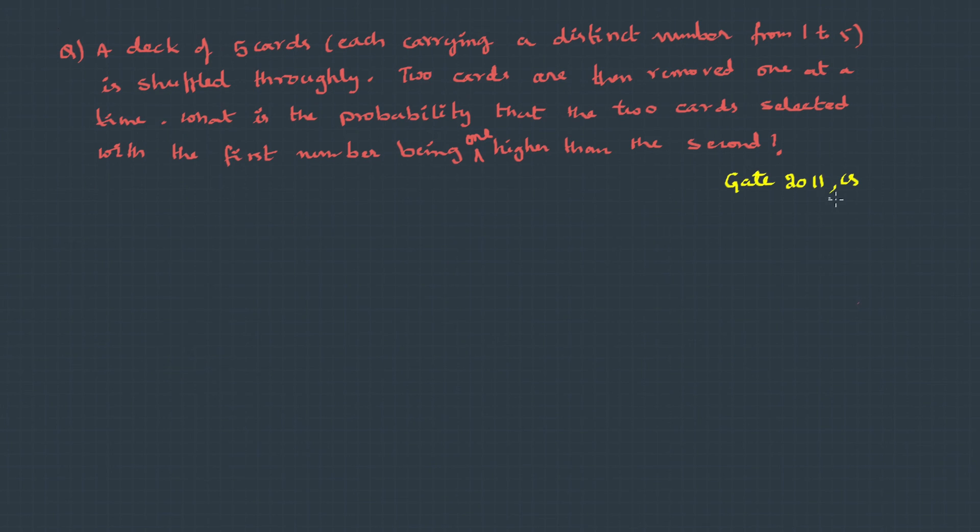Here we have a question asked in Gate 2011 Computer Science. A deck of 5 cards, each carrying a distinct number from 1 to 5, is shuffled thoroughly. Two cards are then removed, one at a time. What is the probability that the two cards selected have the first number being 1 higher than the second? With all this, first let's define the sample space. The cards are removed one after the other, so the first card can be taken in 5 different ways. Now once you pick up the first one, we are left with 4 cards and we can pick up the next card in 4 ways. That's 20 ways.